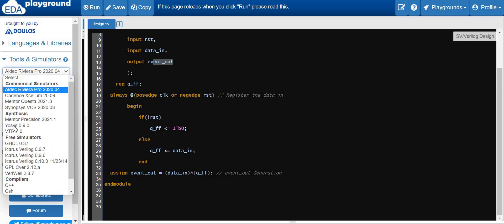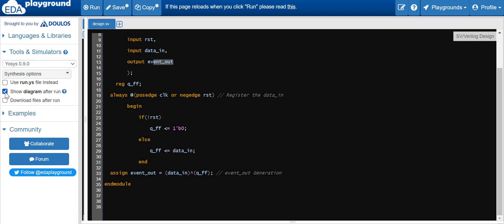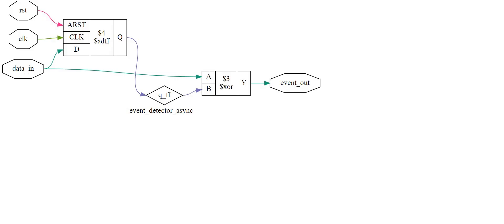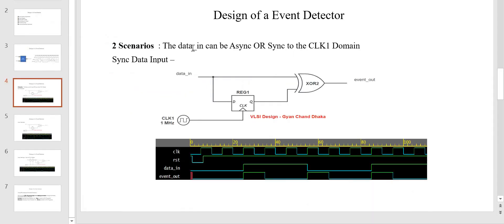To synthesize the design, select the EOC synthesis tool and enable 'show diagram after run.' Save the design and run it. This is the circuit diagram realized using the EOC synthesis tool. We have the D flip-flop — data in gets registered here, and then the registered data in and the data in go through the XOR operations to produce the event output. This is pretty similar to what we discussed in our event detector circuit design.